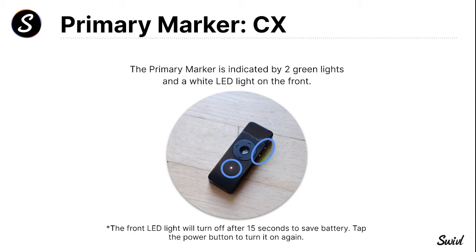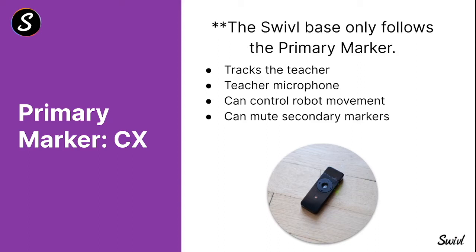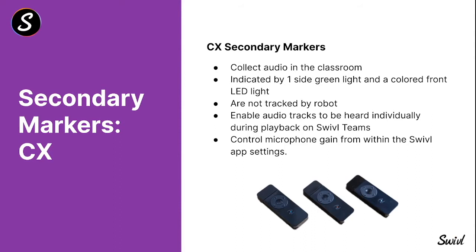The primary CX marker shows two green lights and a white LED on the front. After about 15 seconds, that LED turns off to save battery — you can tap the power button to see it light up again if you're confused about which marker is which. The Swivel base will only ever follow the primary marker, so it's vital the teacher keep it on them. It tracks the teacher, has the microphone, can control robot movements, and can mute secondary markers.